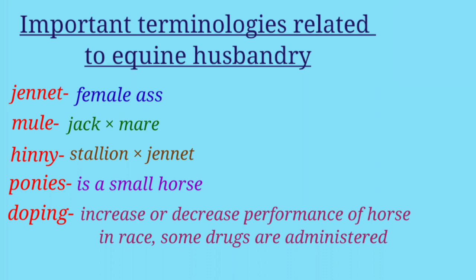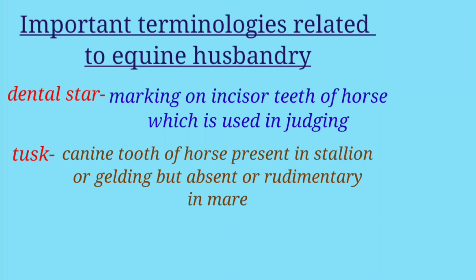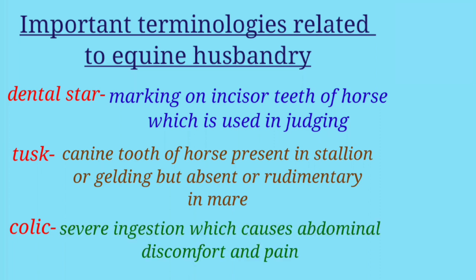'Dental star' is the marking on the incisor teeth of a horse, which is used in age judging. 'Tusk' is the canine tooth of horses, present in stallions and geldings but absent or rudimentary in mares. 'Colic' is the most important symptom observed in horses — it is severe indigestion that causes abdominal discomfort and pain.